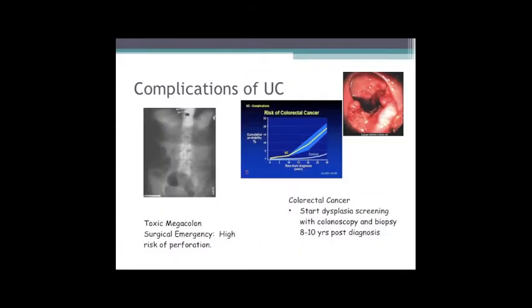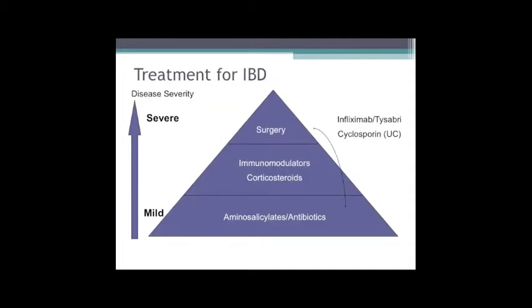The big thing to be aware of with ulcerative colitis is the risk of colon cancer. In patients with pancolitis, risk starts at about ten years from diagnosis. We usually start dysplasia screening with colonoscopy and biopsy about eight to ten years after diagnosis, doing it every two to three years initially and then annually, with random biopsies looking for dysplasia as well as targeted biopsies.